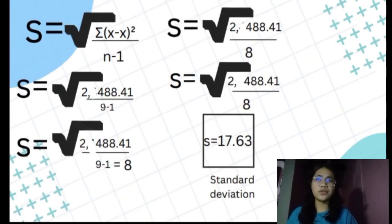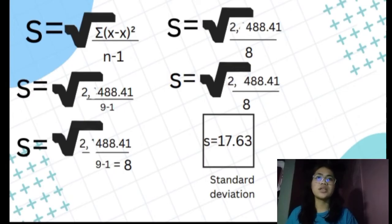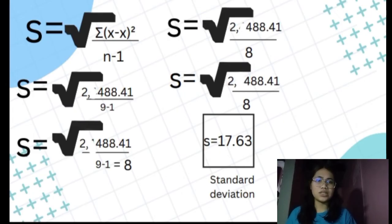Using our formula, let's substitute: s equals the square root of 2,488.41 over n minus 1. n minus 1 equals 8. So 2,488.41 divided by 8, then taking the square root, gives us 17.63. Our standard deviation is 17.63.